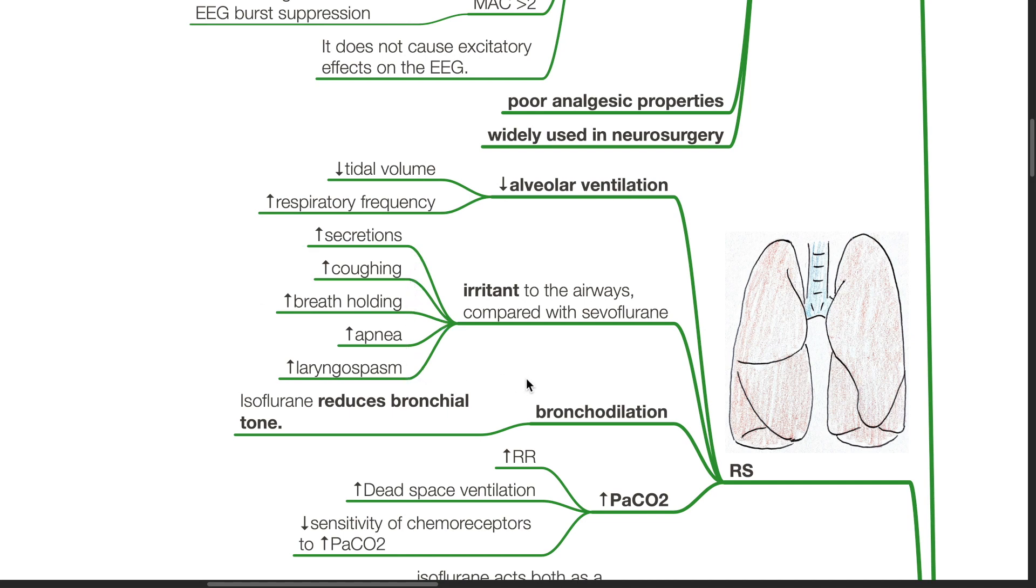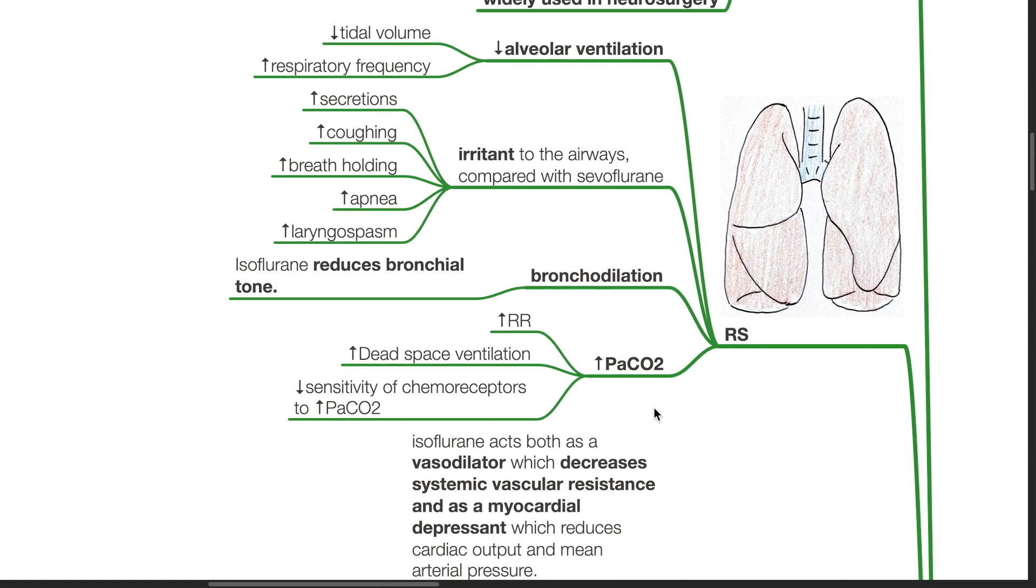Isoflurane reduces bronchial muscle tone. There is increased PaCO2 due to increased respiratory rate, increased dead space ventilation and decreased sensitivity of chemoreceptors to PaCO2.